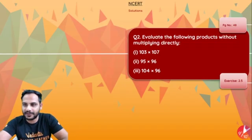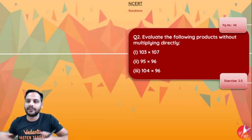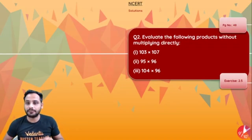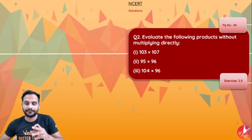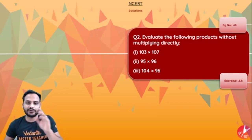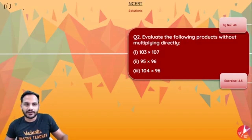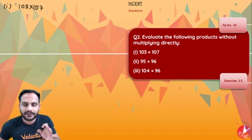This is page number 48, Exercise 2.5, Question Number 2: evaluate the following products without multiplying directly. You need to find the product without direct multiplication, so we need to use identities here. The first one is 103 into 107 — both numbers are very close to 100.